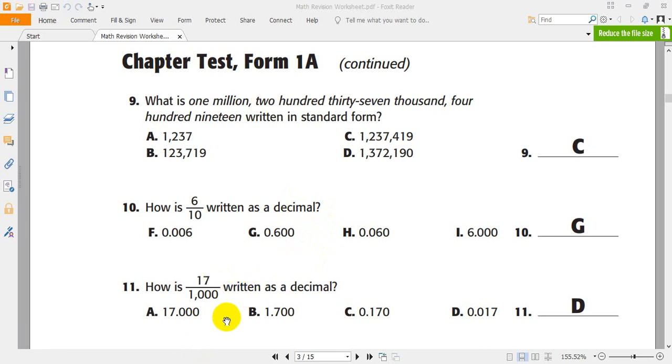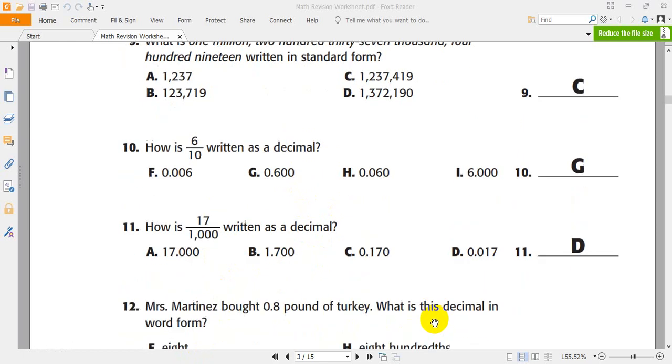17 over 1,000 could be written as what? 0.017. Yes. So, D is the right answer.